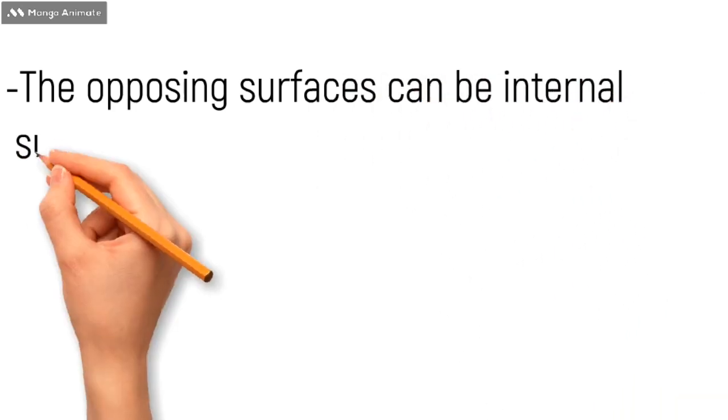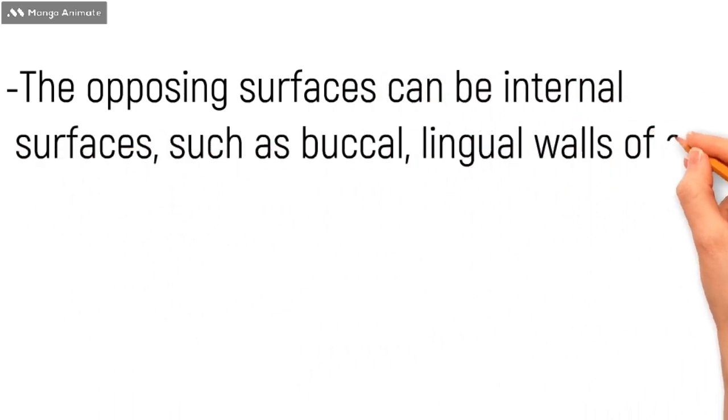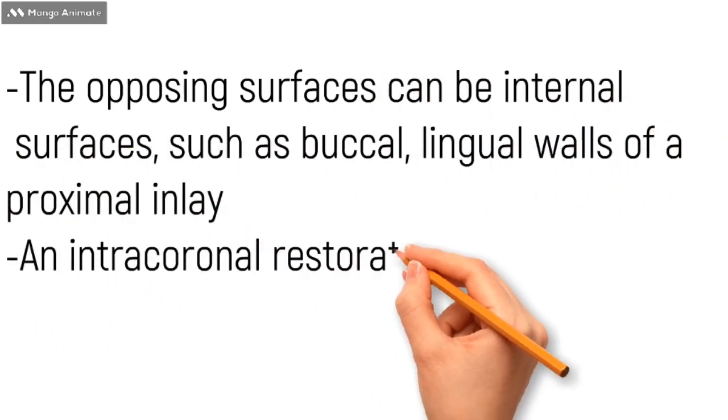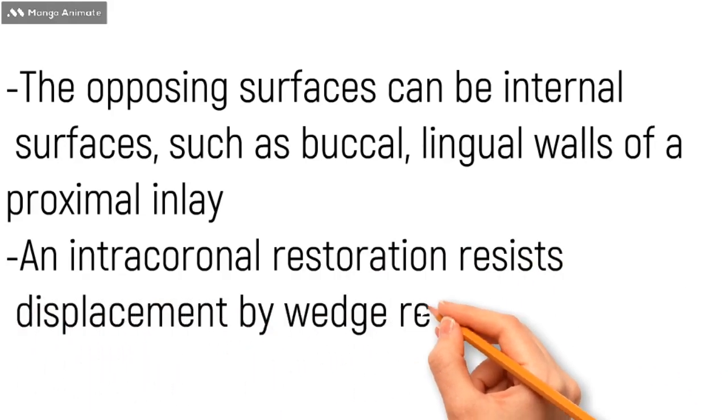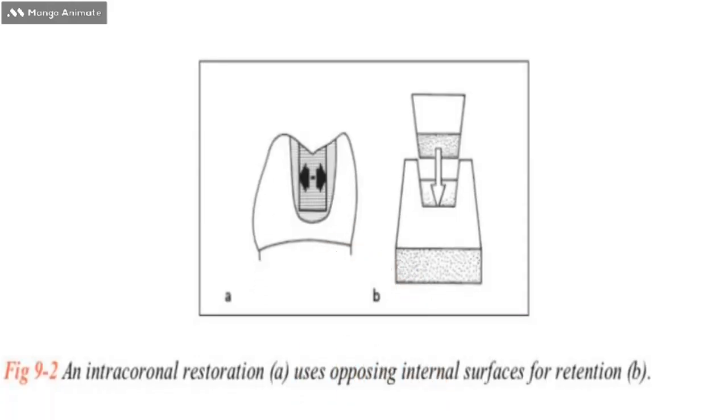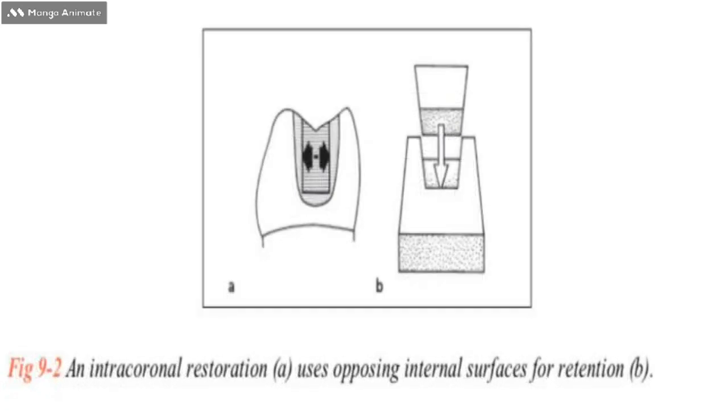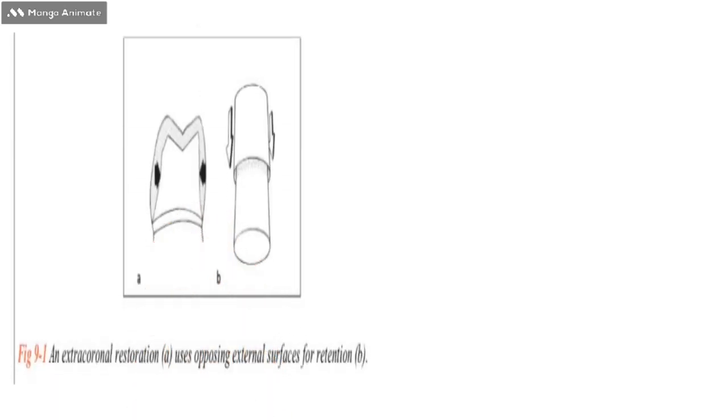We have talked about the extracoronal, now let's talk about intracoronal restoration. The opposing surfaces can be internal surfaces such as buccal and lingual walls of a proximal inlay. Here again if you see in this figure, A is showing a proximal occlusal inlay which is an intracoronal restoration, and in B you can see the arrow pointing inside which shows that the inlay uses an opposing internal surface for retention, which is known as wedge retention.